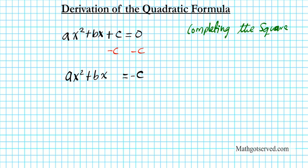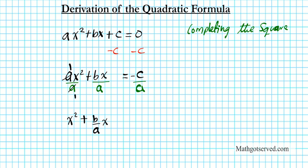To get rid of the a, I will divide everything by a. So divide each term by a on both sides. The a's cancel, and we are going to have x squared plus b over a times x equals negative c over a.